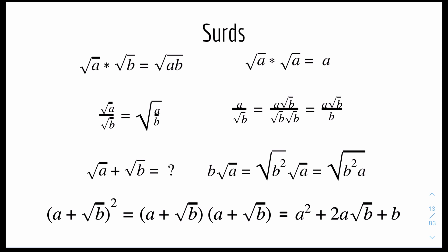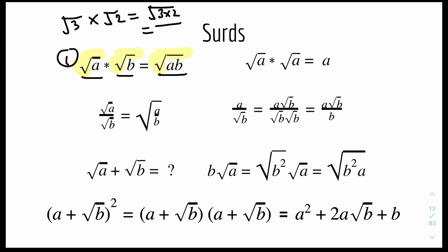Here are some rules for surds. Starting with the first one, we have a basic one: root A, or surd A — I'll call it both, it's the same thing. So root A times root B equals root AB. Notice that both A and B have a surd or root, so if you times them together it becomes one whole surd. For example, surd 3 times surd 2 equals surd 6.